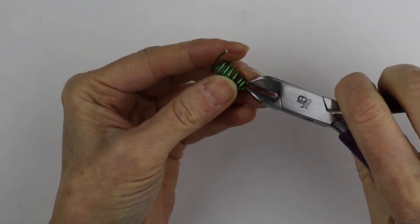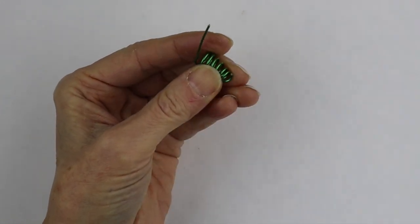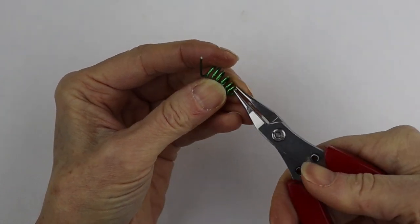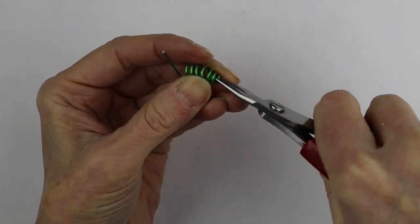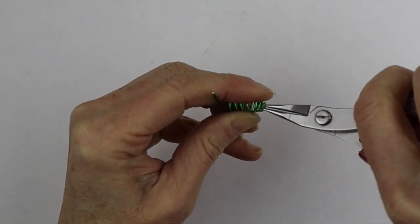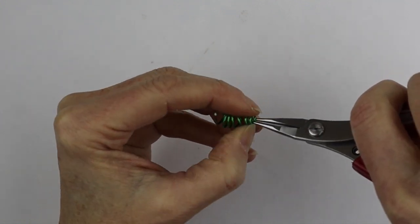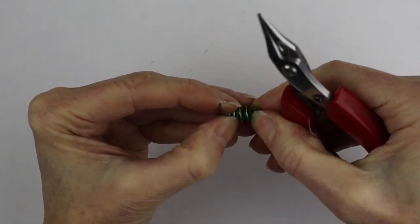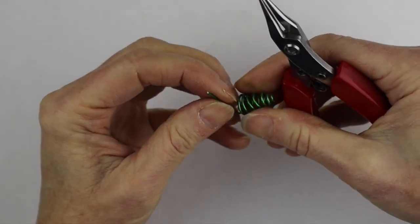And then what you want to do is make sure your end is cut kind of flat so it's not cut on an angle. And then just bend this around. And then you're going to form your spiral how you want for your tree. Make sure they're more or less the same size on both sides.